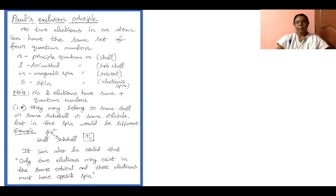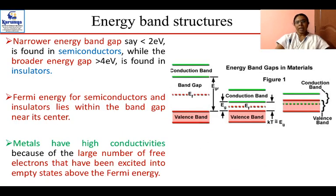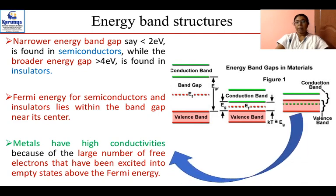Returning to the band gap structure: a narrow band gap of around 2 eV applies to semiconductors, while for insulators it is greater than 4 eV. Metals have high conductivities because a large number of free electrons are excited into the empty states — the conduction band — above the Fermi energy, making metals very good conductors.